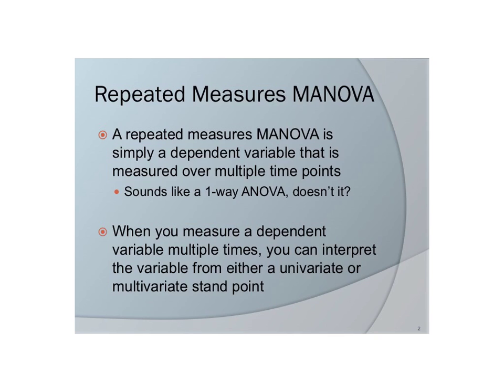If you think about your output for either a factorial ANOVA, repeated measures ANOVA, or any one-way ANOVAs you did in 620, that multivariate output was always coming out. You can look back to the mixed factorial data from earlier this semester — really what you were getting was components of a MANOVA, even though we were addressing the data from a univariate perspective. When you measure a dependent variable multiple times, you can look at it from either perspective. There are pros and cons to looking at the data both ways.